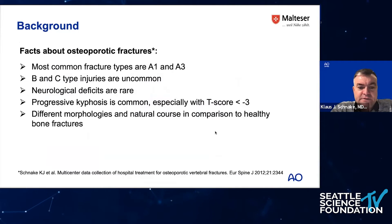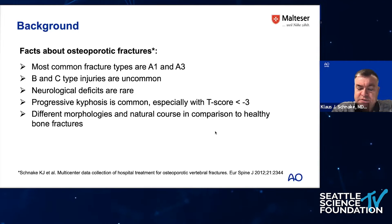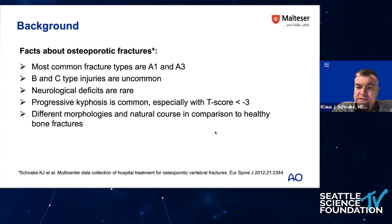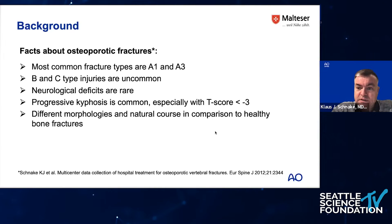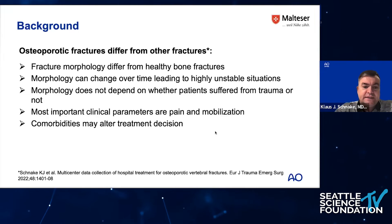Most commonly, osteoporotic fractures are either A1 or A3 with regard to the AO Spine classification system. B and C type injuries are uncommon, as well as neurological deficits. We made a study with more than 600 patients, and we had only 2.5% of patients complaining about a neurological deficit due to the fracture. On the other hand, progressive kyphosis is quite common, especially if the T-score is low — below minus 3. So it makes sense to measure the T-score.